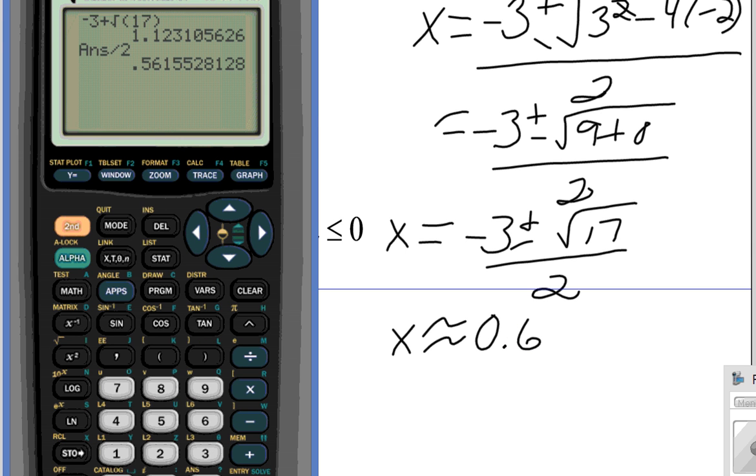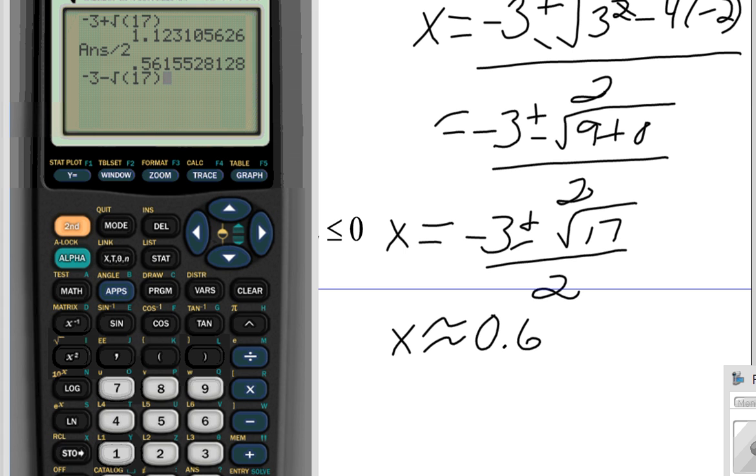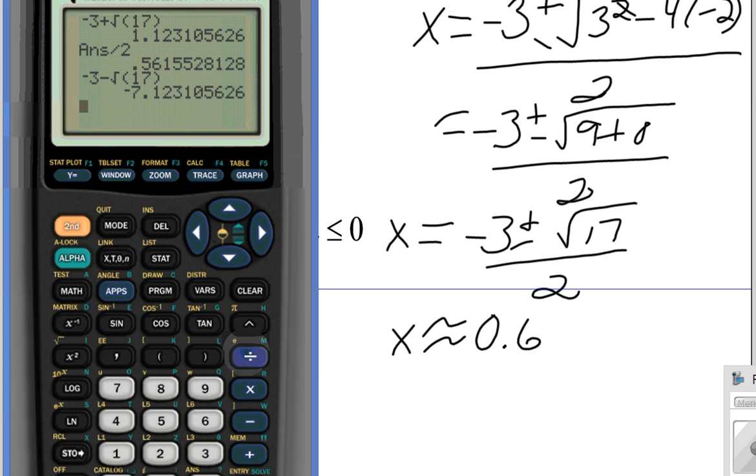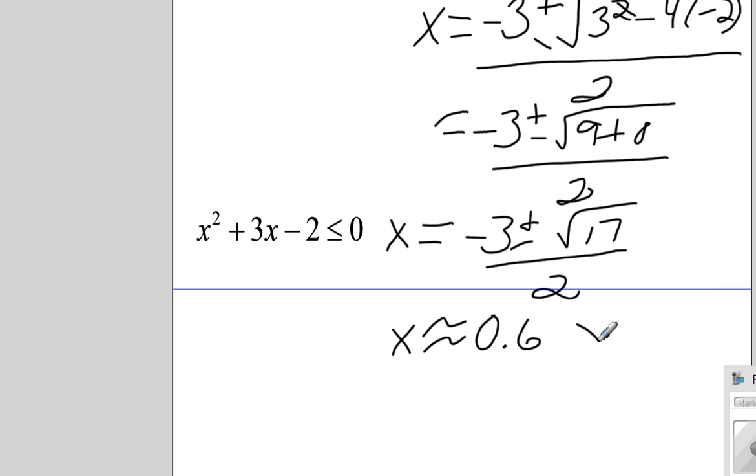Let's do the same thing but minus this time. So negative 3 minus the square root of 17, evaluate that first, then divide it by 2. So now we have approximately negative 3.6. So x is approximately negative 3.6.